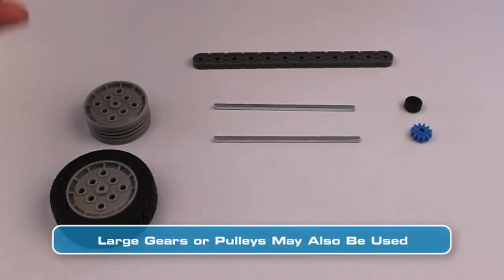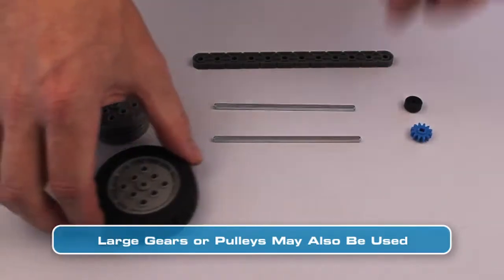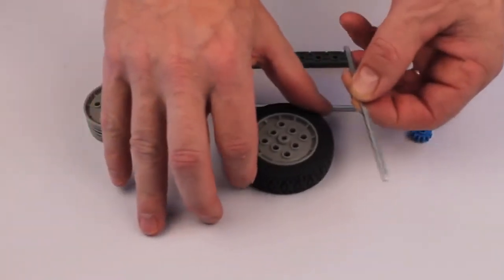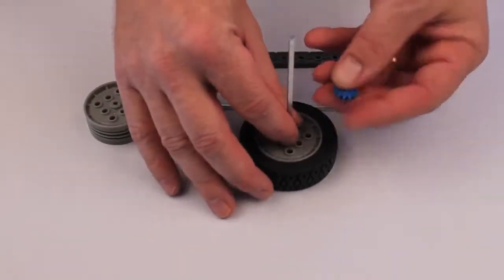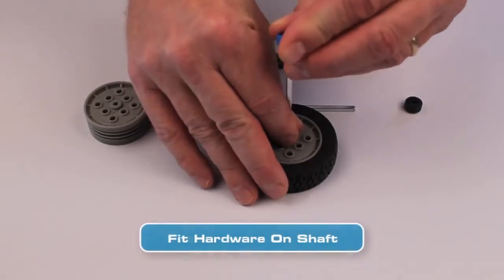wheel hubs or fully assembled wheels can be used as a temporary base to hold the shaft. Next, fit the small diameter hardware onto the shaft.